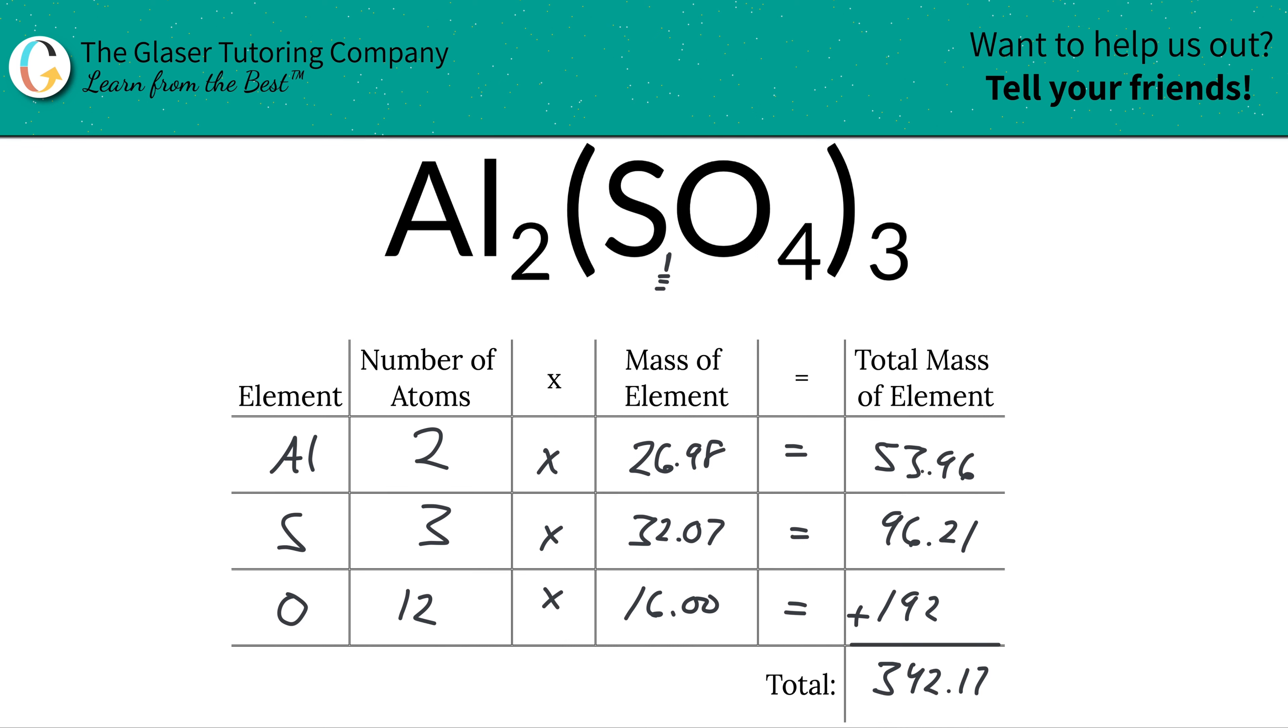So now what I can finally do is find the percent composition of each element here in this compound. All I'm simply going to do is take the total mass of the element, for aluminum here, and then divide it by the total mass of the entire compound. That's a simple percent formula, part over whole. Then multiply it by 100. So this would be 53.96 over 342.17, multiply that by 100, and we're going to get our answer of about 15.77%. So that would be the percent composition of aluminum in aluminum sulfate.